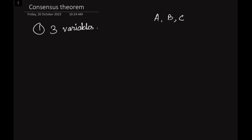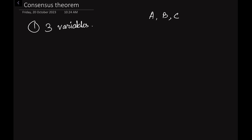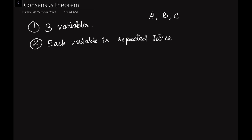I will consider one example, then explain it, and after that we will verify using Boolean algebra. The second condition for using the Consensus Theorem is that each variable must be repeated twice. In the given Boolean expression, A must be present twice, whether in a sum of product or product of sum expression. This theorem is applicable for both SOP and POS.